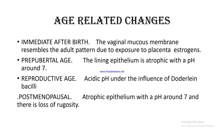Age-related changes in the vagina. Immediately after birth, the vaginal mucous membrane resembles the adult pattern due to exposure to placental estrogens. At pre-pubertal age, around pH 7, the lining epithelium is atrophic. At reproductive age, the pH is acidic under the influence of Doderlein's bacilli. Post-menopausally, the epithelium is again atrophic with a pH of around 7 and there is loss of rugosity.